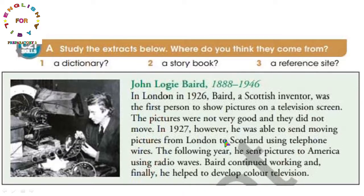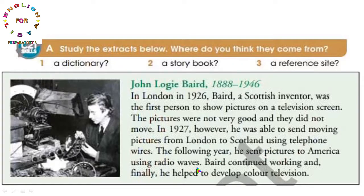بيرد استمر في العمل وأخيراً ساعد في تطوير التلفزيون الملون. هذه معلومات مهمة داخل هذا النص: مولده وممات، والسنة التي تمكن فيها من إيصال الصور المتحركة في التلفزيون 1926، وفي 1927 أرسل صوراً متحركة من لندن إلى سكوتلند، وفي 1928 أرسل إلى أمريكا عن طريق الموجات اللاسلكية، وساعد في تطوير التلفزيون الملون.